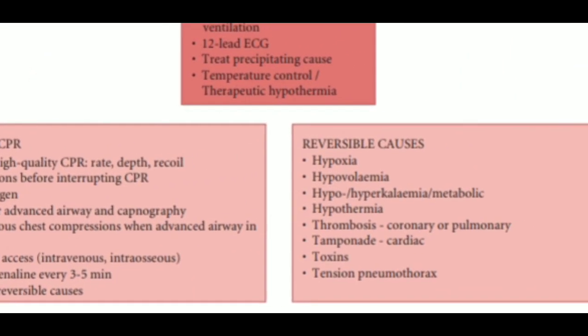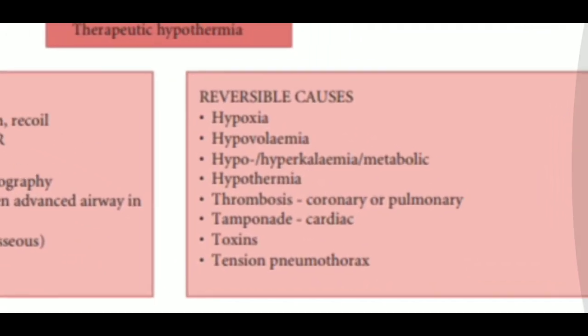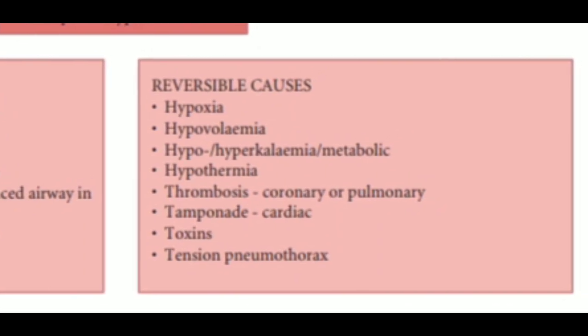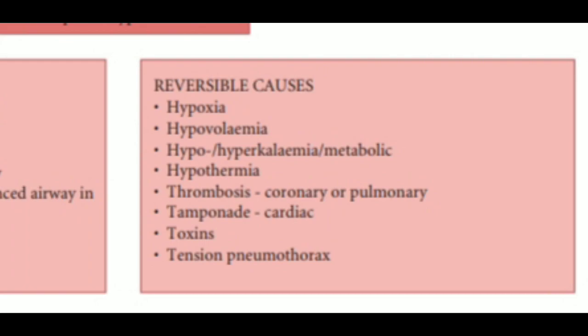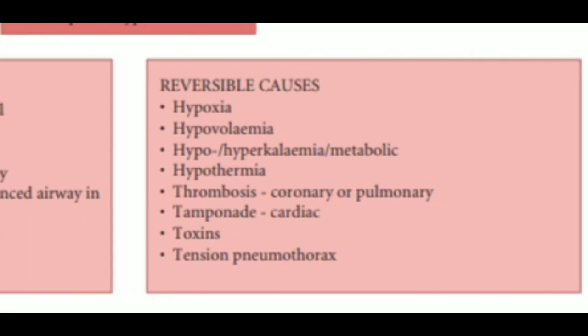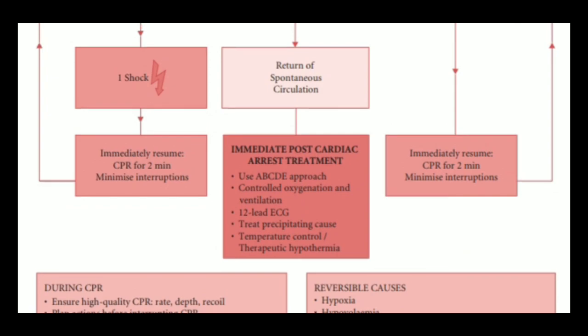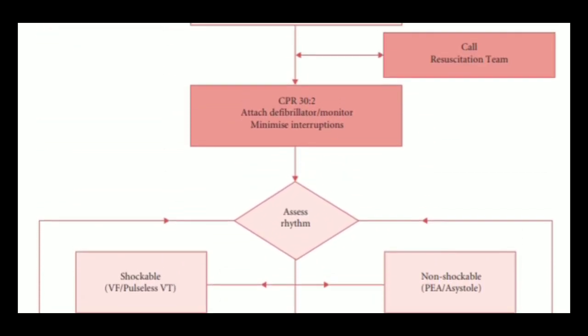Reversible causes must be identified and corrected. These are remembered as the 4Hs and 4Ts: the 4Hs are hypoxia (give oxygen), hypovolemia, hypo/hyperkalemia or metabolic disturbances, and hypothermia. The 4Ts are thrombosis (coronary or pulmonary), cardiac tamponade, toxins, and tension pneumothorax. All these causes need to be corrected — that is the main ALS algorithm.